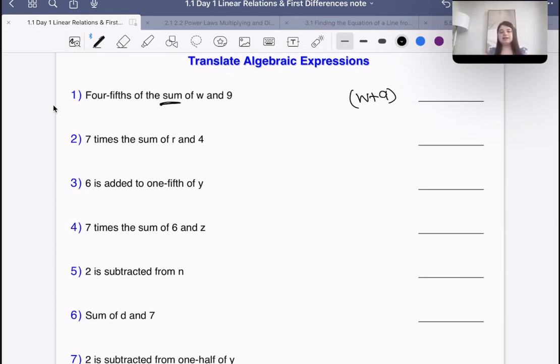Then it says four-fifths of. What does of mean? Of means multiply. Whenever you see of, it means we multiply. Four-fifths of the sum of w and 9 means four-fifths multiplied by w plus 9 in brackets, because that's four-fifths of that sum, not four-fifths of w and then we add 9. That's the distinction I wanted to make.